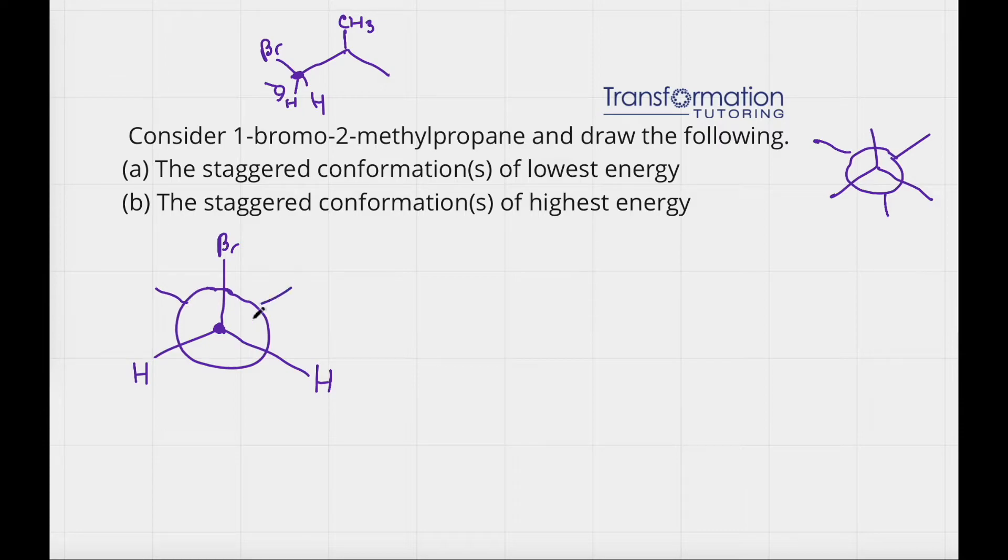Next the staggered conformation must look like this, spread out. And what is the carbon behind it connected to? So this carbon is connected to a CH3 group. Again I'm going to start by drawing it any way I want. Another CH3 group, this is also a CH3 group. And what is the third group this carbon is attached to? Well it has a hydrogen.